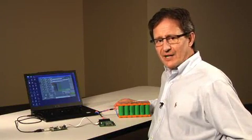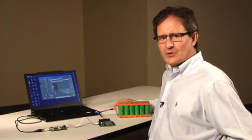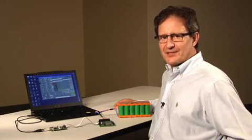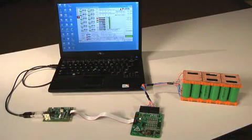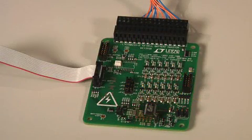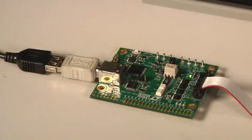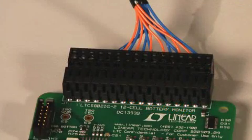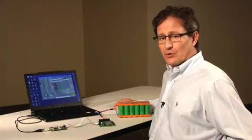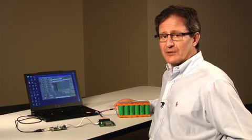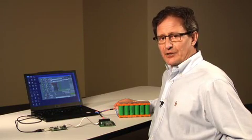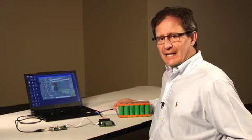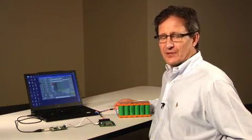Linear Technology provides demonstration hardware and software, which makes it easy to start using the 6803. Here I have my laptop running the graphical user interface, which controls our 6803 demonstration board. In between the computer and the 6803 is a simple USB interface board. The demo board comes with this handy connector, so you can easily wire up to 12 cells per board. Multiple boards can be stacked to monitor up to 120 cells. A user's manual helps you install the software and navigate the push buttons, which demonstrate the features of the IC.